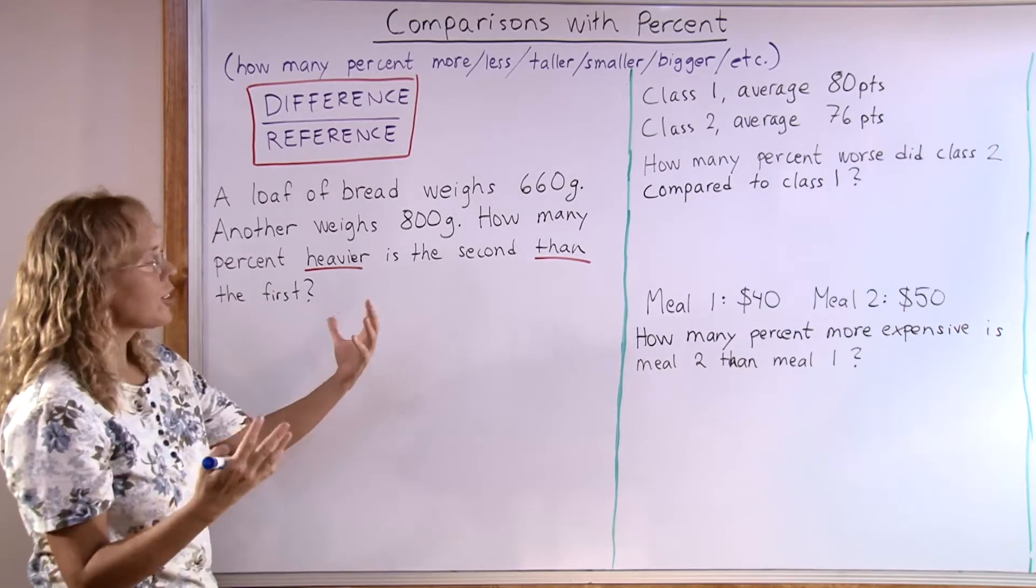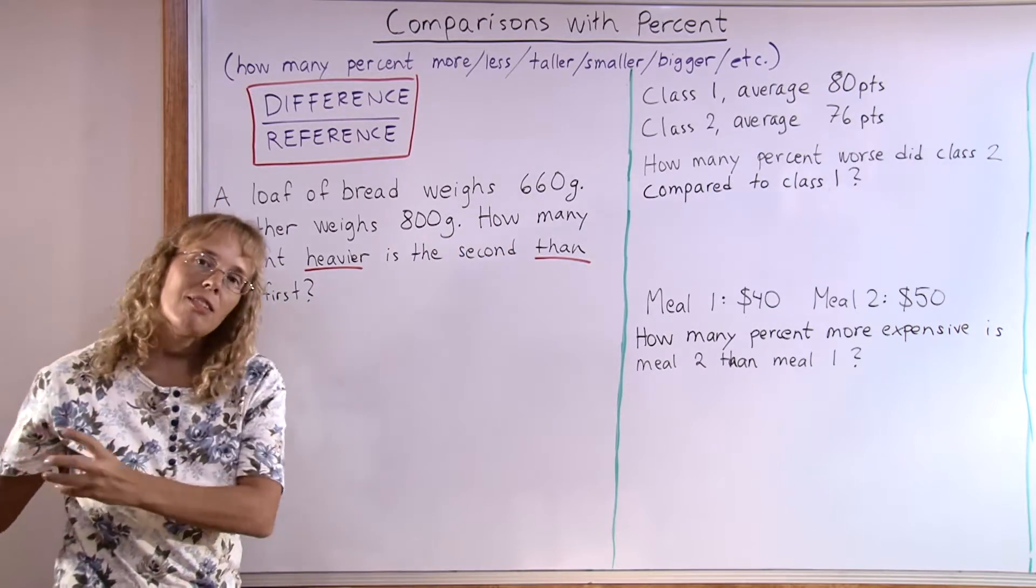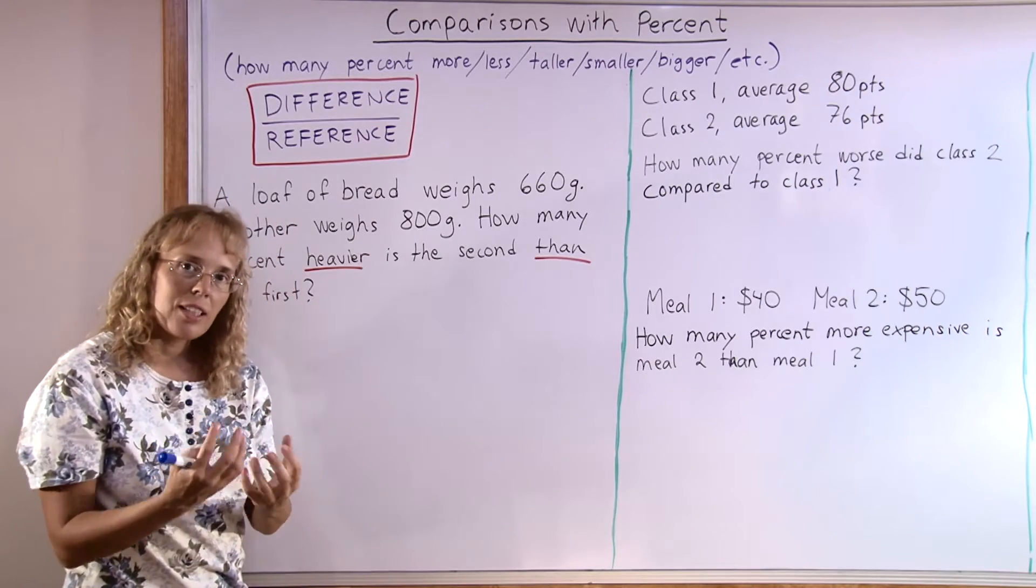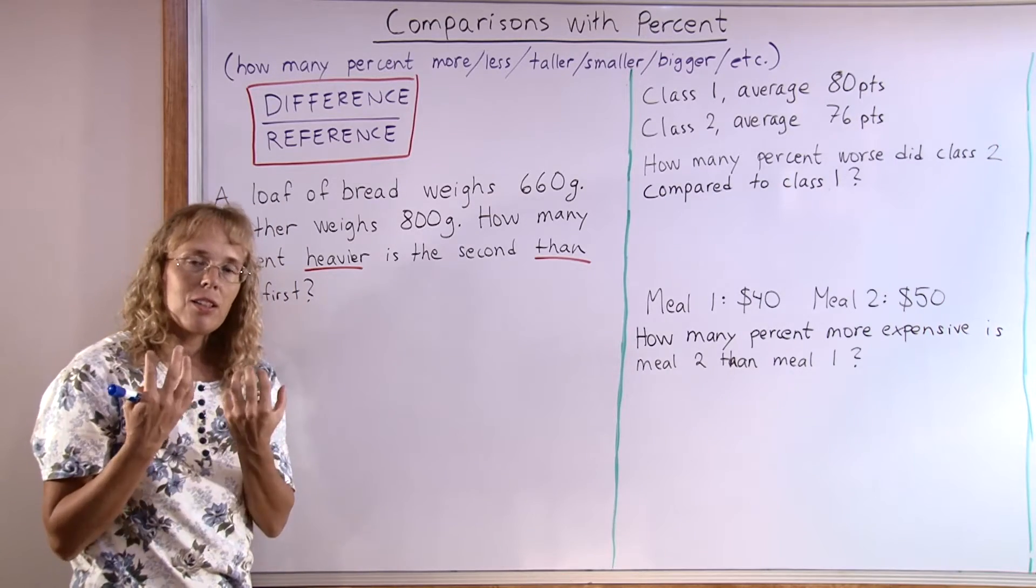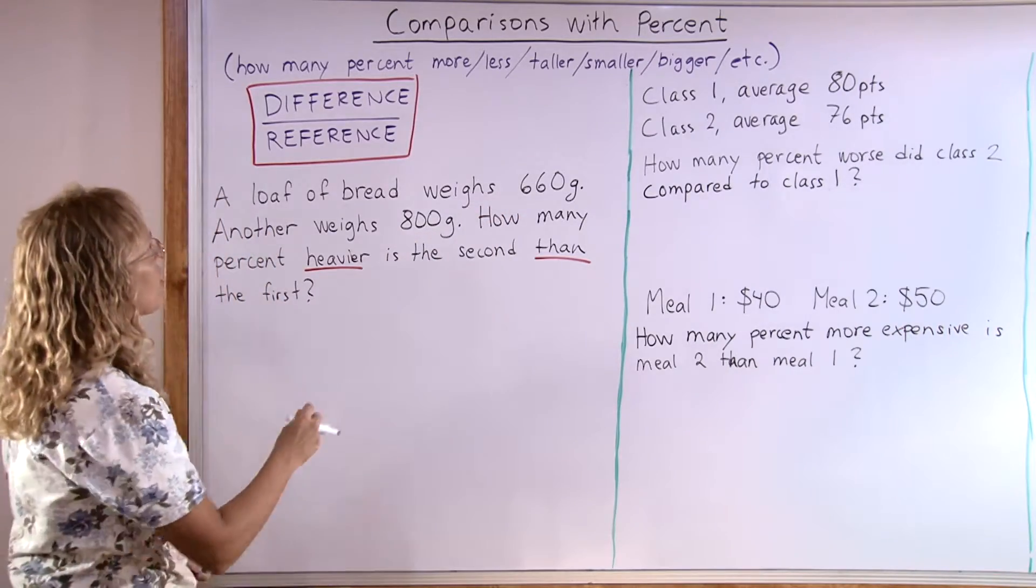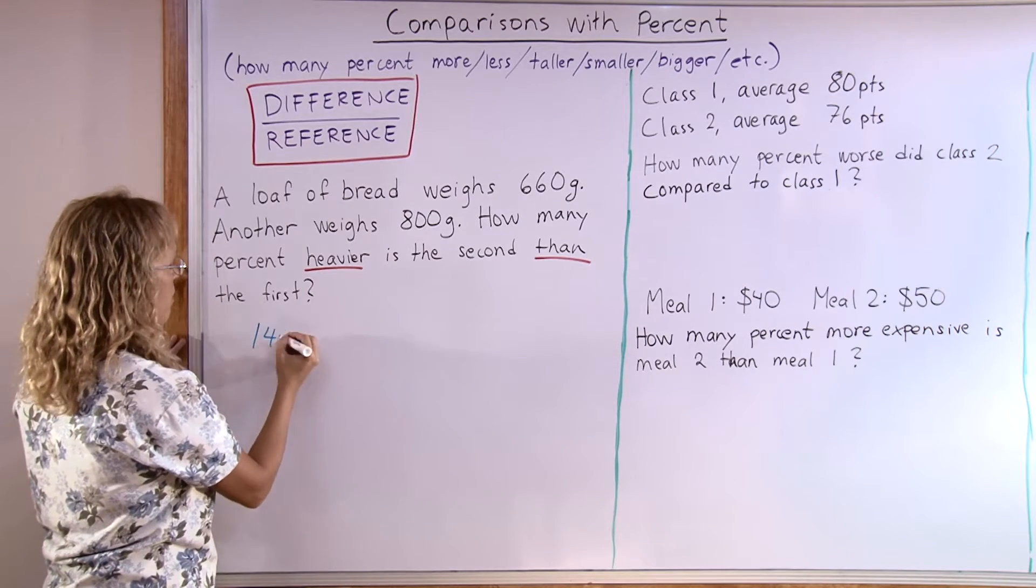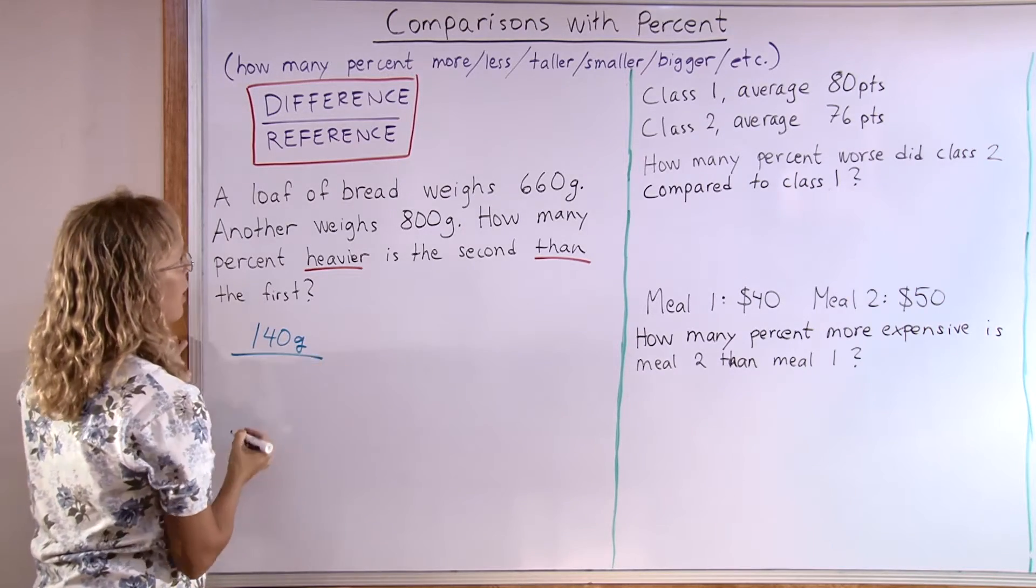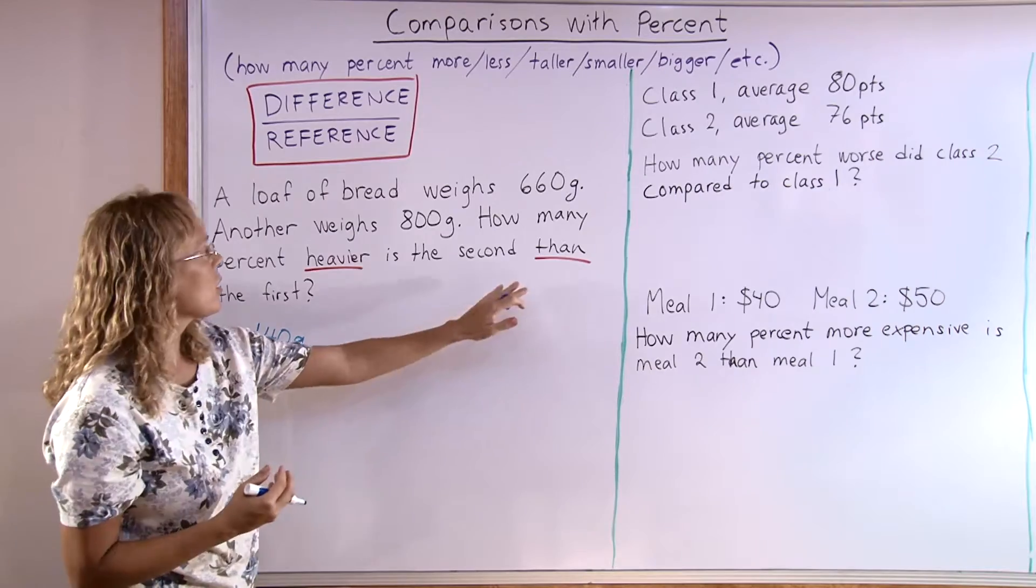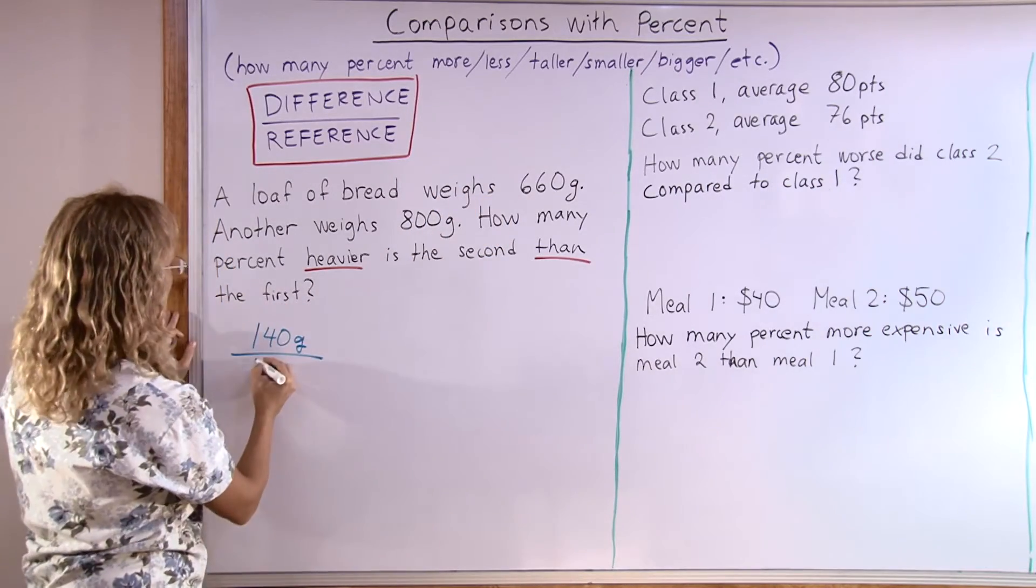It is as if the first bread was there first, and the second one arrives on the scene, and then we are looking at this heavier bread and comparing it to the first bread. So we look at the difference in their weights first, which is 140 grams, and divide that by the reference weight, which is the first bread, 660 grams.